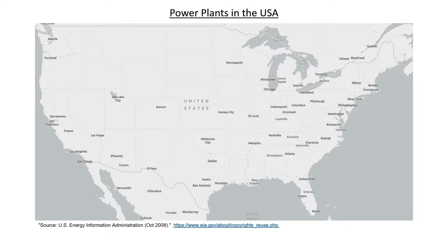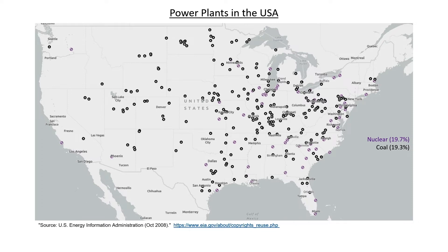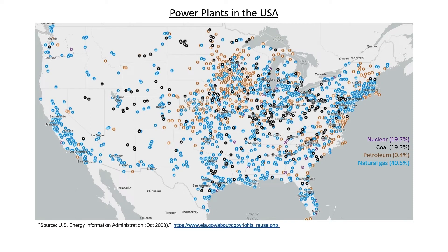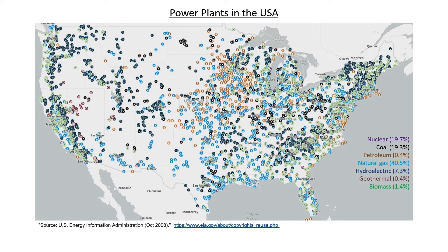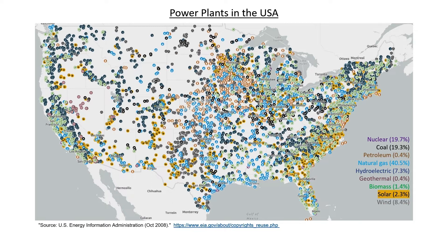We're going to start with the power plants. Where are the power plants in the United States? There are a number of nuclear plants — they're about 19% of the country's power supply. Coal is another 19%. We have a number of petroleum plants. Natural gas is almost 40% of the nation's power supply, and natural gas plants have been built up in recent years at an astonishing speed because, relative to coal, natural gas is actually quite clean — it doesn't have a lot of emissions other than carbon dioxide. Hydroelectric is about 7%. Geothermal and biomass are minor contributors along with solar. Wind is about 8%.